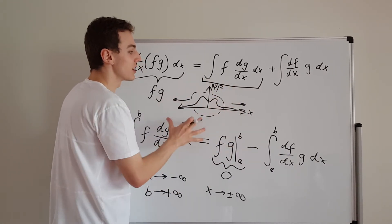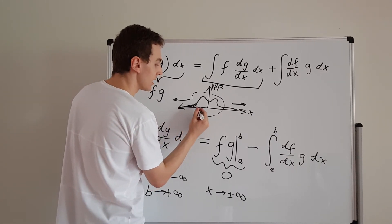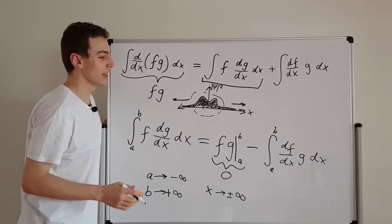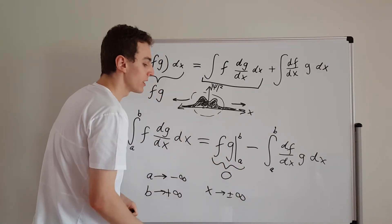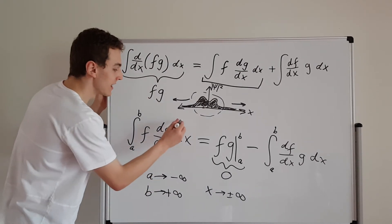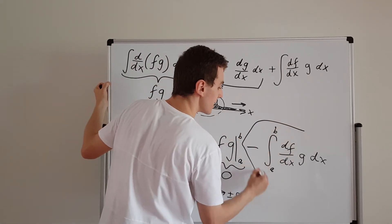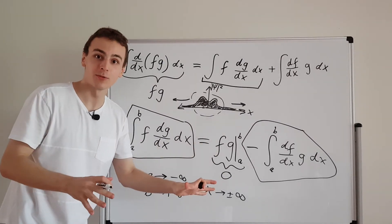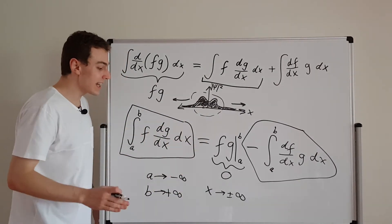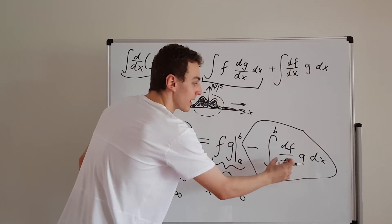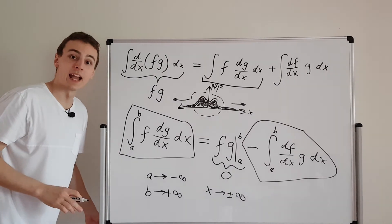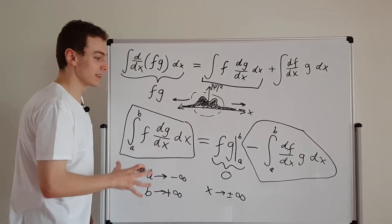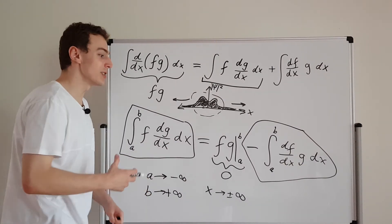If we're taking the integral from minus infinity to infinity we're finding the area under the curve, and if the function is normalized that area equals one. So when the product of functions at the boundaries goes to zero, integration by parts tells us that the left-hand side equals the right-hand side term with a minus sign. Swapping the derivative inside the integral simply gives us a minus sign out front. This is a fact we're going to use again and again in quantum mechanics throughout the subsequent derivations.